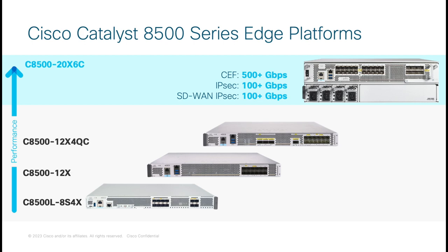Additionally, the C8500 20X 6C platform can be deployed in non-SD-WAN environments to provide all the enterprise services seen in our previous ASR1000 routers. The C8500 20X 6C platform is ideally suited for co-location as a multi-cloud gateway, multi-tenanted edge router, SD-WAN border router in a multi-region fabric, or SD-WAN aggregation router.